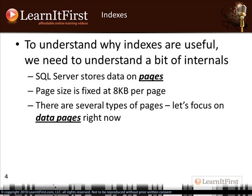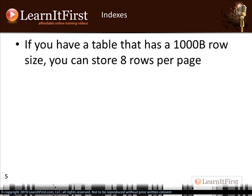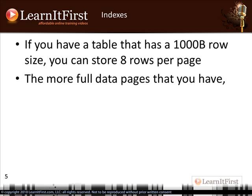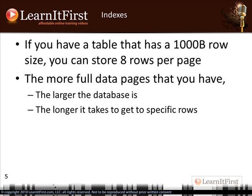When you add a row to a table, it gets placed on a data page because it's data. Now, with an 8k page size, if each row in a table is fixed at 1,000 bytes, that means we could store eight rows on a page. That's what we mean when we're thinking about page size and row size. The more full your pages are and the more pages you have, the larger your database is going to be — and the longer it's going to take to get to specific rows.